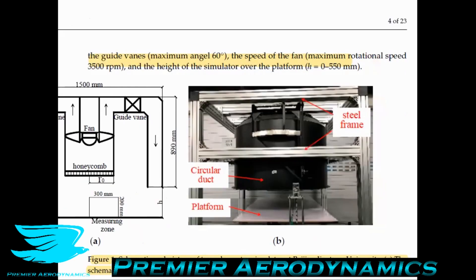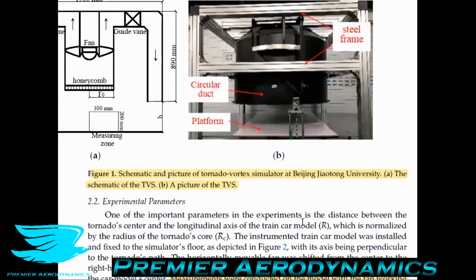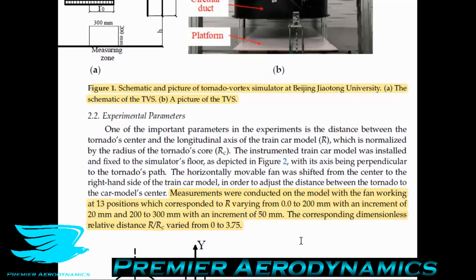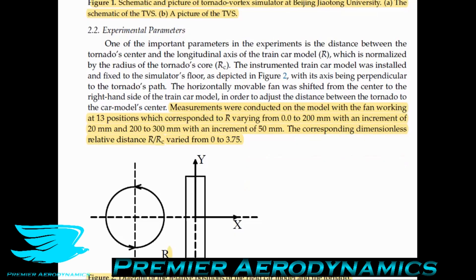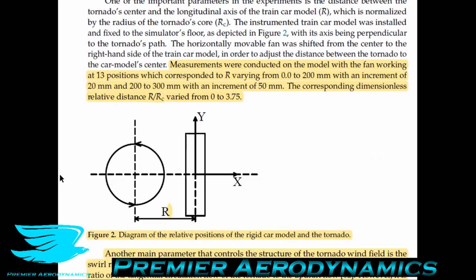That's how you make a tornado in a wind tunnel, which is really cool. There are a bunch of experimental parameters to consider. Measurements were conducted with the fan working at 13 positions corresponding to a distance R varying from 0 to 200 millimeters with an increment of 20 millimeters. When you have a tornado and put your train next to it, you place the train at varying distances from the tornado, since different distances will produce different flow physics and forces. Distance is normalized to the tornado's core: a distance of 1 means you're at the very edge, and 0 means you're in the tornado's eye. They examined ranging from 0 to 3.75 — from right in the eye to well outside the tornado core.